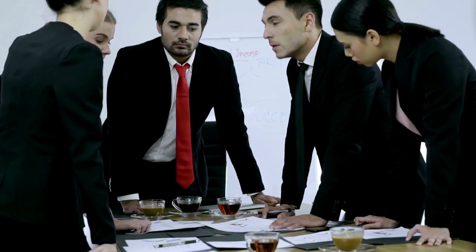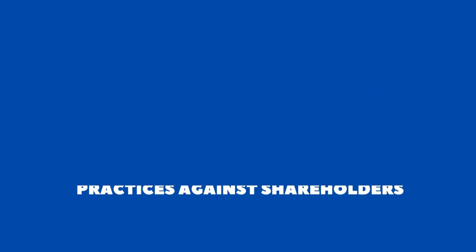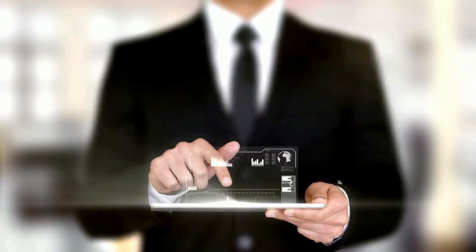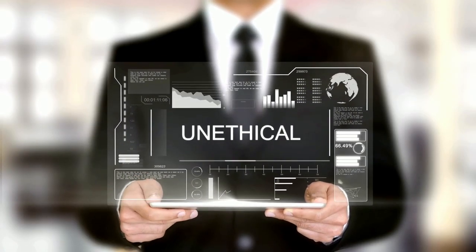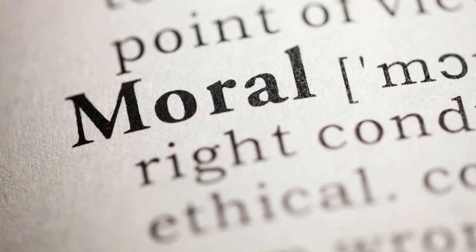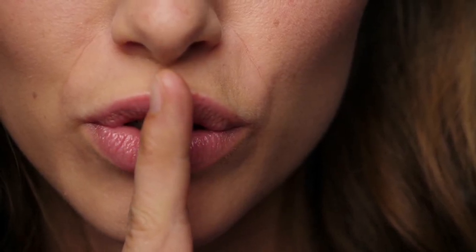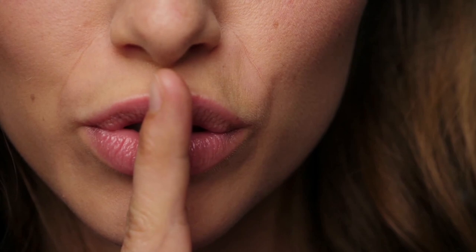I cover unethical business practices against four major groups: consumers, employees, competitors, and shareholders. Let's start by briefly defining an unethical business practice. It's basically an activity that violates commonly accepted moral and sometimes legal standards for business conduct. Although not everyone agrees on matters of morality, unethical business practices generally involve some form of deception, undue influence, or harmful activity against consumers, employees, or third parties.